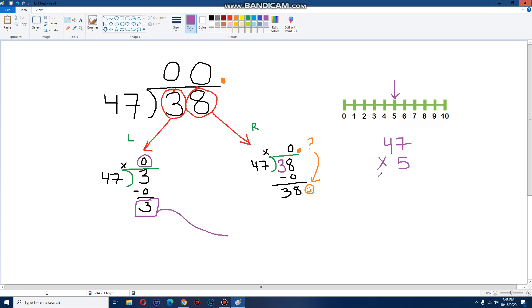So I'm going to do 47 times 5. And I'm going to check and see if I get an answer close to 380. So 7 times 5 is 35. 5 times 4 is 20. And 20 plus 3 is 23. So 47 times 5 is 235. Not bad, but it's kind of small. It's not that close to 380.